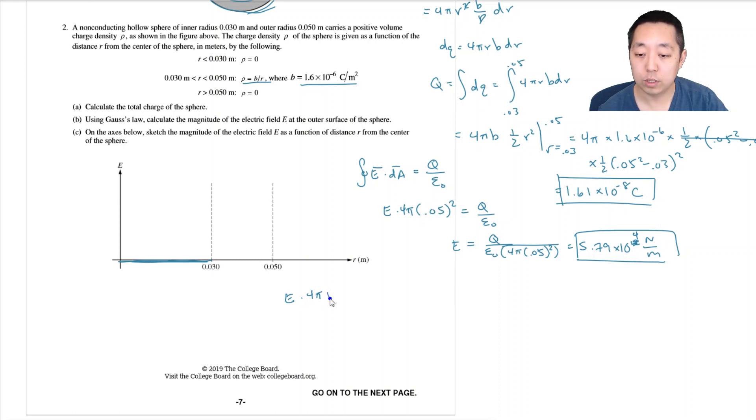E times 4 pi R squared is equal to the enclosed charge. The enclosed charge would be kind of like I did this integral, but instead of 0.03 to 0.05, I would have 4 pi times B times 1 half R squared. So it would be the R squared minus 0.03 squared. And all of that divided by, oh no, that was it, that's the enclosed charge divided by epsilon naught. So it's kind of like an R squared. So if I divide by the R squared here, it's going to increase. So this is the enclosed charge. This is epsilon naught. I would divide by 4 pi R squared. So the 4 pi's cancel. So I'd have 1 half B R squared. If I divide it by R squared, it would be a constant minus, yeah.